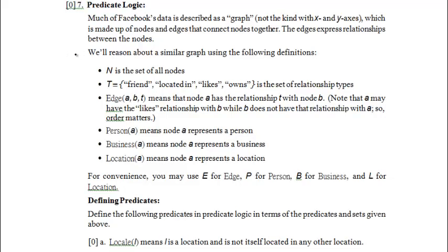We'll reason about a similar graph using the following definitions. N is the set of all nodes. T is the set containing 'friend', 'located in', 'likes', and 'owns' — it's the set of relationship types. Edge(A, B, T) means that node A has the relationship T with node B. A may have the 'likes' relationship with B while B does not have that relationship with A, so order matters. A and B are nodes, T is some type of relationship, and Edge(A,B,T) doesn't necessarily mean Edge(B,A,T).